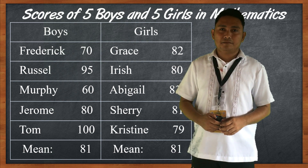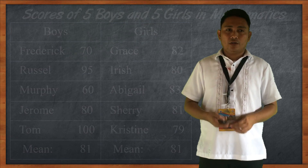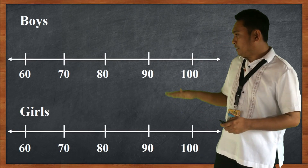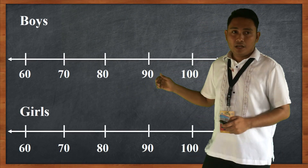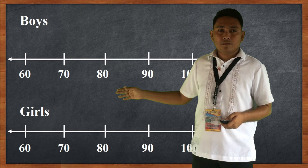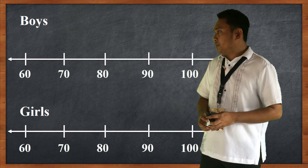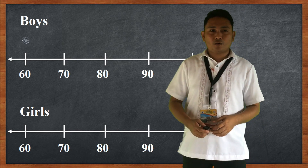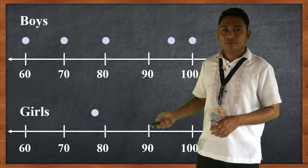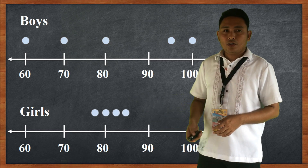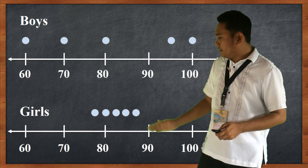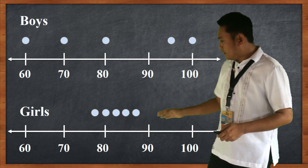What does this mean? To better understand the scores of the girls compared to the boys, here is the Cartesian coordinate graph of the scores of the boys. The scores 60, 70, 80, 95, and 100 are plotted. If we compare the scores of the boys and the girls, the scores of the boys are very dispersed, while the scores of the girls are situated closely together.